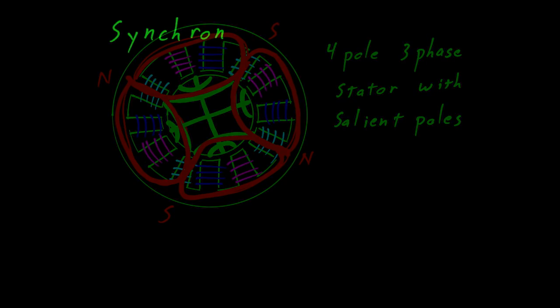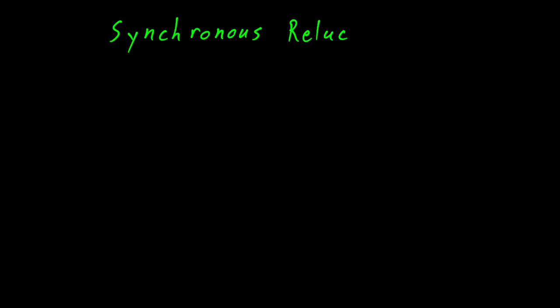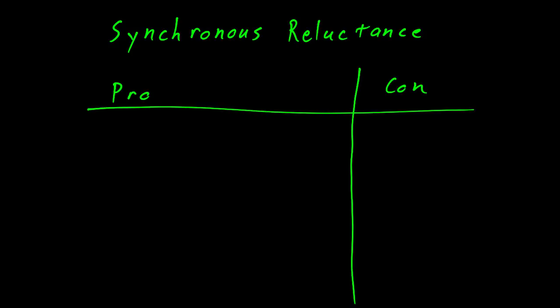Sorry, this video is getting a bit long. But before we end, I wanted to talk about the pros and cons of the synchronous reluctance machine. First, it's a synchronous machine. It will turn at a constant speed. It has a high efficiency, represented here by the letter eta.